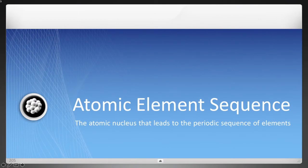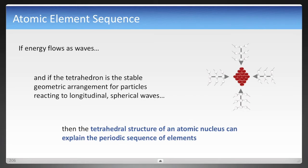And now let's move on to the atomic element sequence. This is what led to eventually the periodic table of elements. To explain this, if energy flows as waves, and if the tetrahedron is the stable geometric arrangement for particles that react to longitudinal spherical waves, then that same structure, the tetrahedron, can explain the sequence of atomic elements.